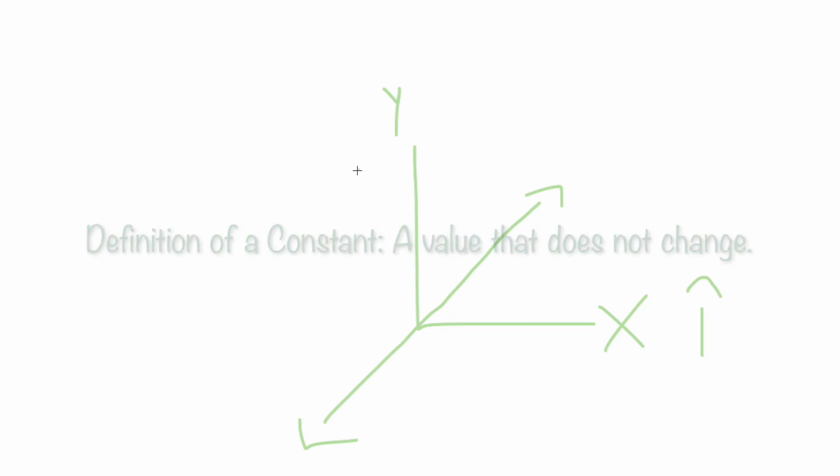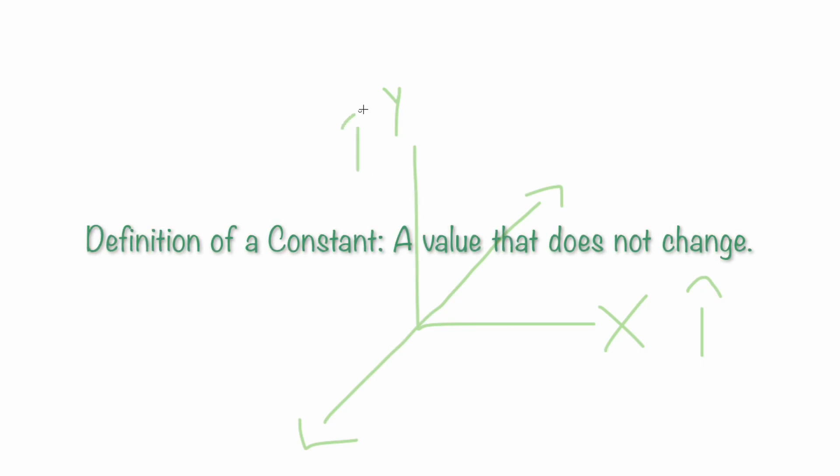If you have a linear line, then the rate of change must be constant. For example, if x is increased by a certain number, then y increases by another constant.